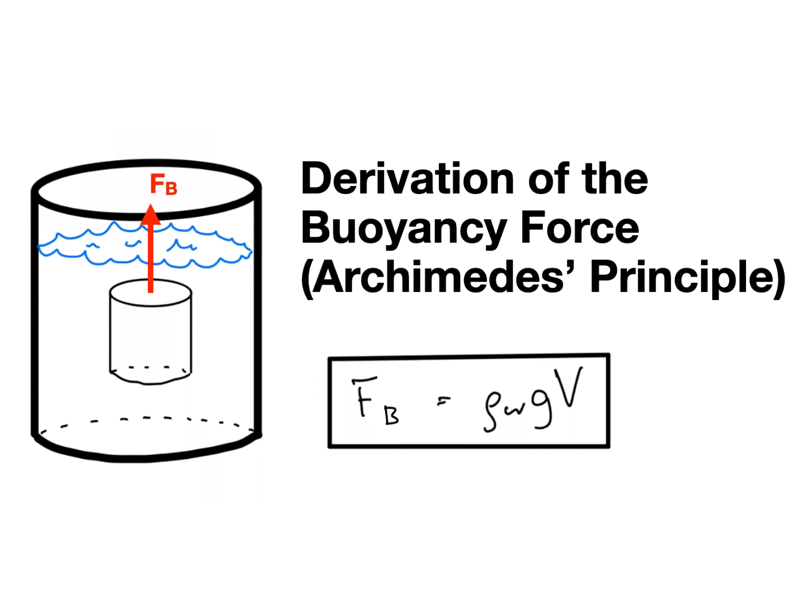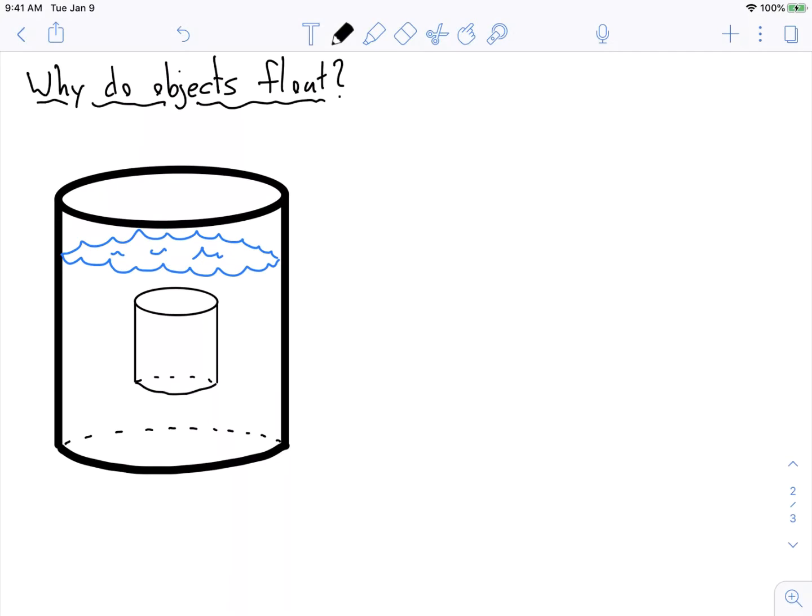So to do this, we're going to think about the forces acting on some object that's submerged underwater that we see here. So what are the forces acting on this object? Well, there are a bunch of forces acting on the sides of this object, but they're all equal and they cancel each other out.